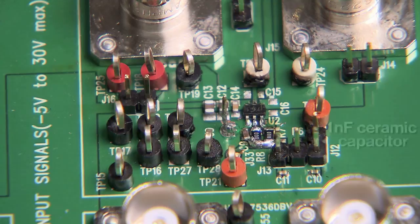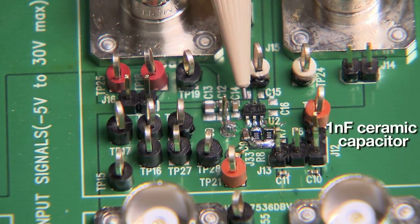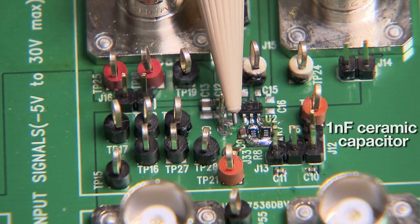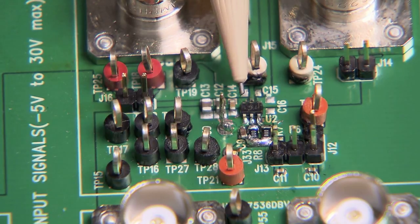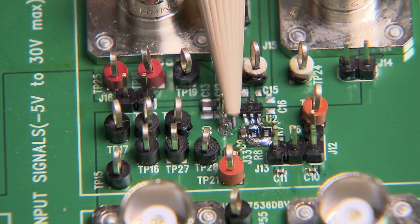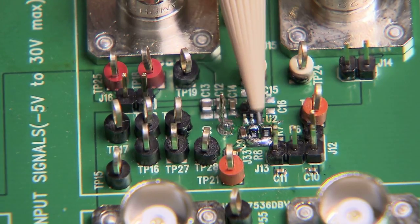To provide a consistent load for the gate driver, a ceramic capacitor similar to the gate of an IGBT is used while measuring performance. For this board, the UCC27531 is driving a 1 nF ceramic capacitor at 30 volts with 0 ohm gate drive resistors.